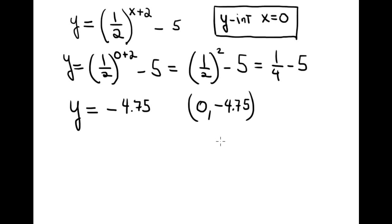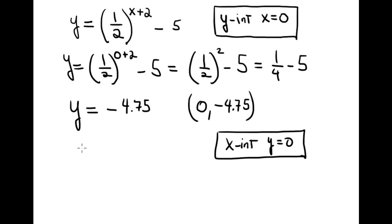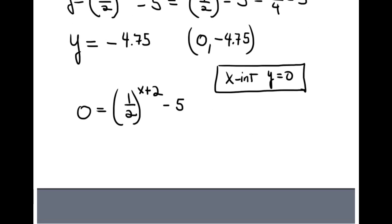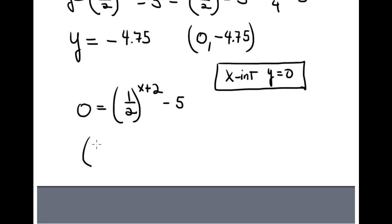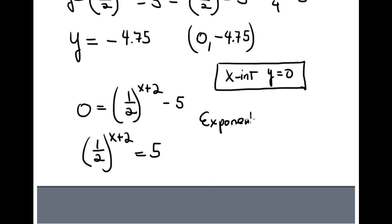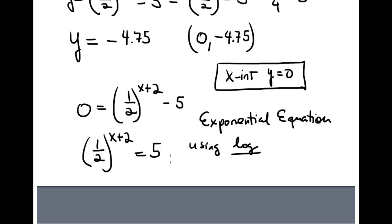For the x-intercept, set y = 0: 0 = (1/2)^(x+2) − 5, so (1/2)^(x+2) = 5. This is an exponential equation that is not obvious to solve — the only way is using logarithmic functions, which we'll study in the next section. The answer is x ≈ −4.32.